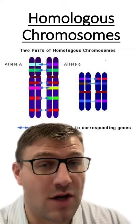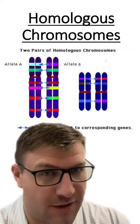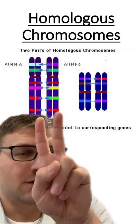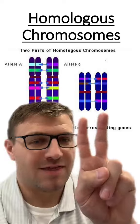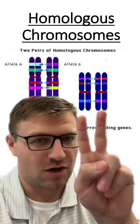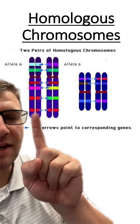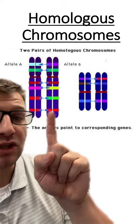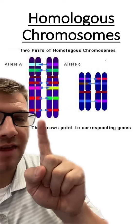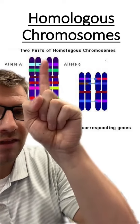Homologous chromosomes are different. These two structures are homologous chromosomes, and these two structures are also homologous chromosomes. That's because they have the same genes in the same locations, and they are the same length.